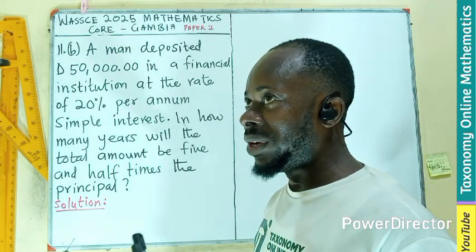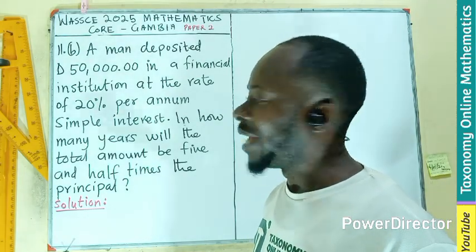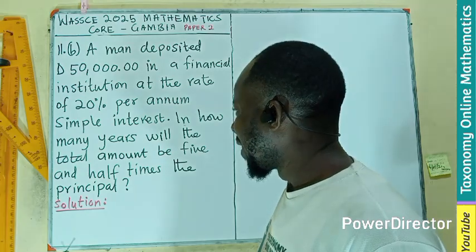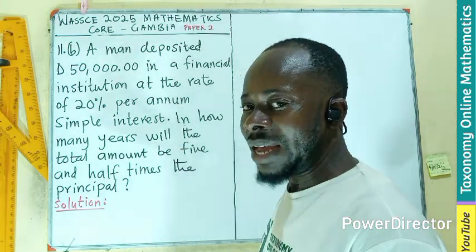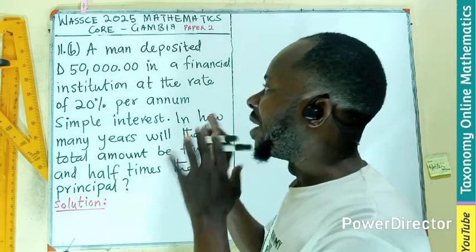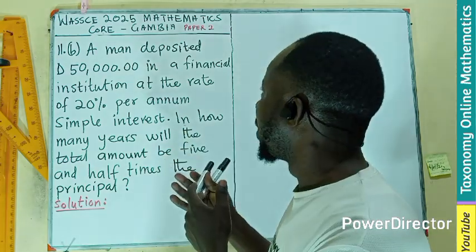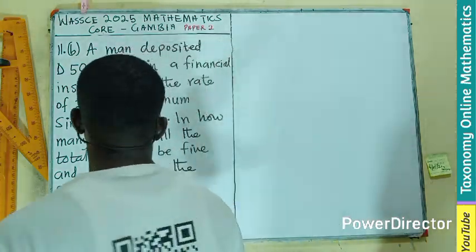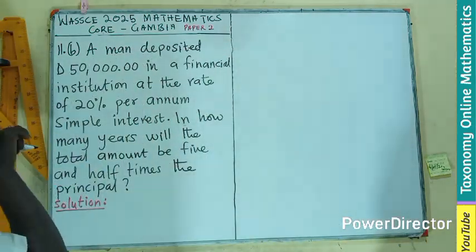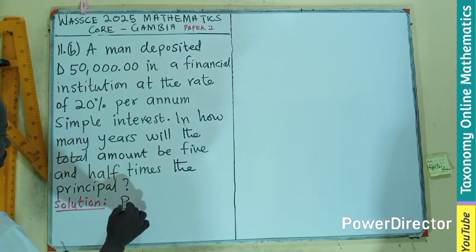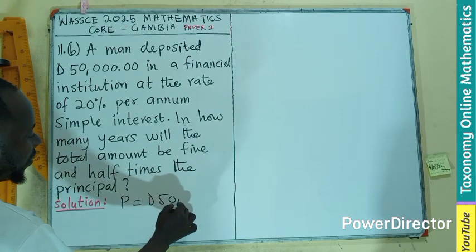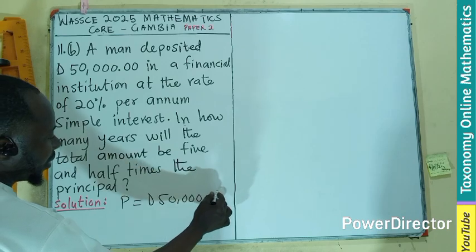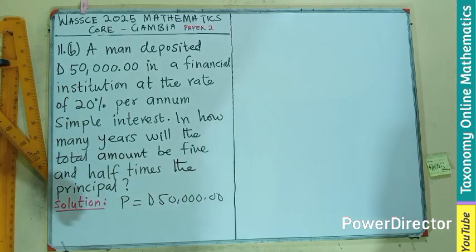We are looking for how many years, meaning we need to calculate for the time. There is another condition: the amount at the end will be five and a half times the principal invested or deposited. Let's pick the information one by one. The principal is 50,000 dollars.